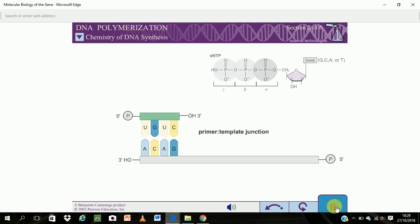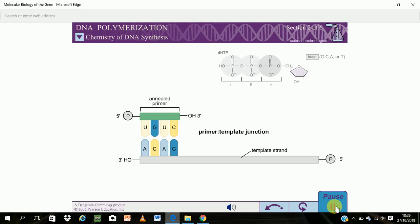The primer template junction has two key components. The template provides the single-stranded DNA to be copied. The primer provides a free 3' hydroxyl at which a DNTP can be added.